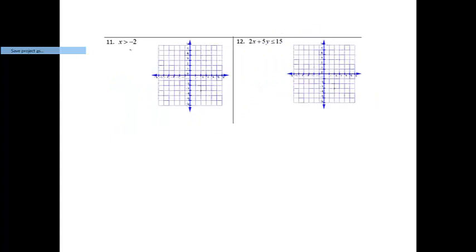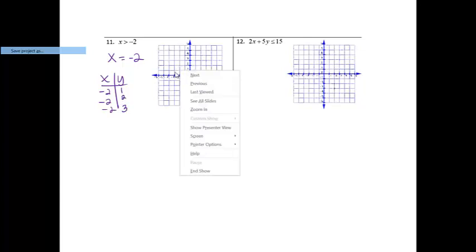Number 11, we've got x is greater than negative 2. So on this one, we are going to graph it first. So we're just going to pretend like that is x equals negative 2. This is one of those funny ones. So I like to do my fail-proof method. x is always negative 2. And then y, I'll just make it 1, 2, 3 this time. So negative 2, 1. So notice we do get a vertical line this time. There's no equals underneath, which means we are not going to include the line in our solution, which means we need to have a dashed line.